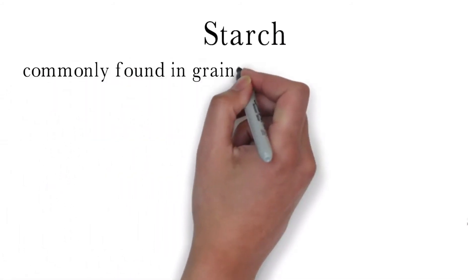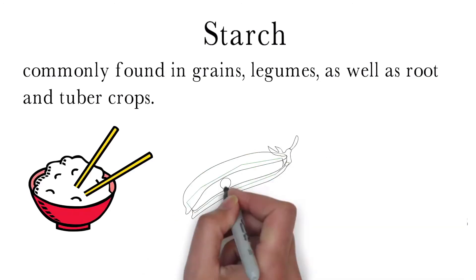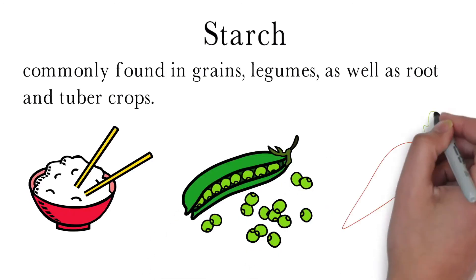Starches make up a large part of our diet. They can be found in grains such as rice, legumes such as peas, and root and tuber crops such as carrots.